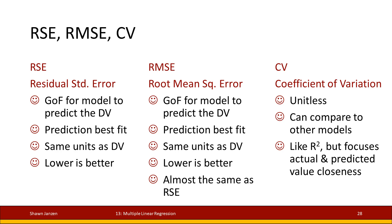So the CV, the coefficient of variation, can be used like that. We can also think of it similarly to R-squared, but what it's actually considering in its numerical interpretation is how closely the actual values and the predicted values are to each other — how far apart are they, and are those residuals smaller in nature?